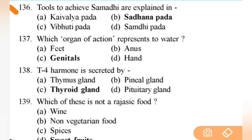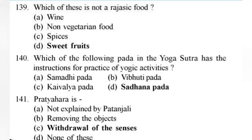Tools to achieve Samadhi are explained in — right answer is B — Sadhana Pada. Next: which organ of action represents water? Right answer is C — genitals. Next: T3 hormone is secreted by the thyroid gland. Next: which of these is not a Rajasic food? Right answer is D — sweet fruits. All the others are Rajasic: wine, non-vegetarian food, and spices.